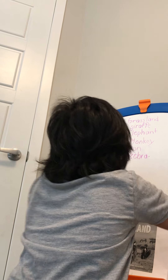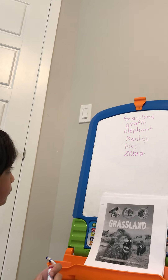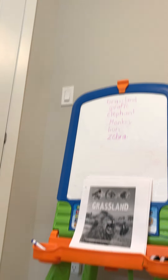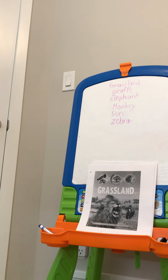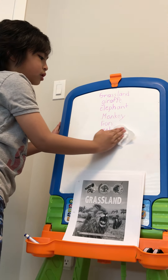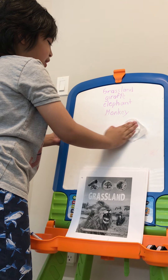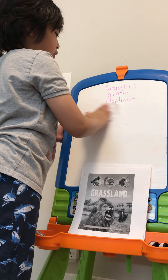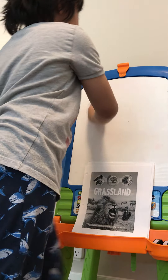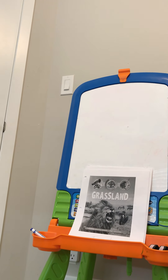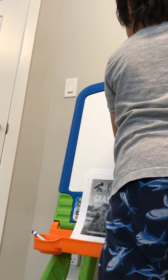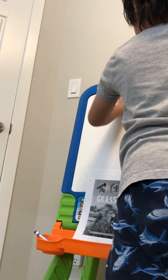A zebra. Yes. So we've got five now. The last one — what's the last one? I want to know what's the last one. It's a mystery. Grassland: we've got giraffe, elephant, lion, zebra, monkey.